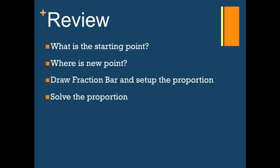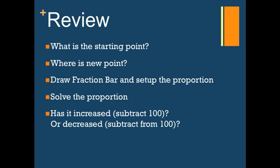Once we set up the proportion, go ahead and solve it with the cross multiplication technique that you've learned. And then finally, once you find a new percent, you determine, has it increased? And if so, you subtract 100 from that number. Or has it decreased? And if so, you subtract that percentage from 100 to get your change.